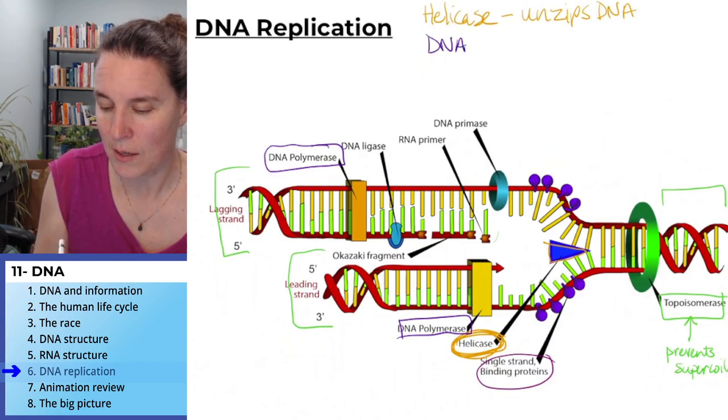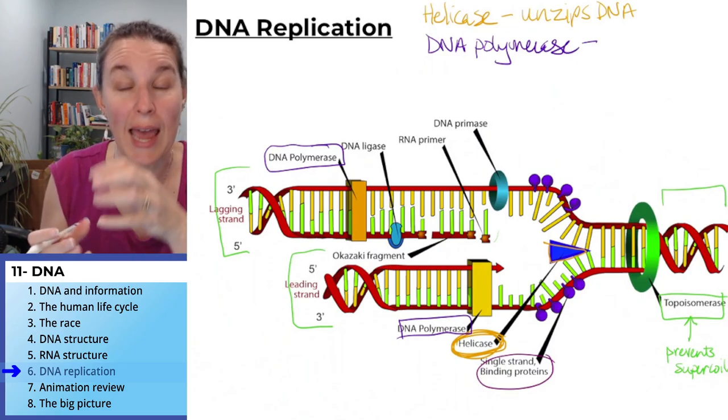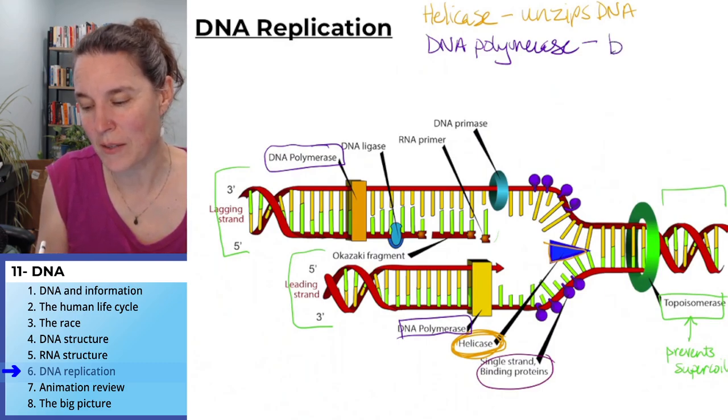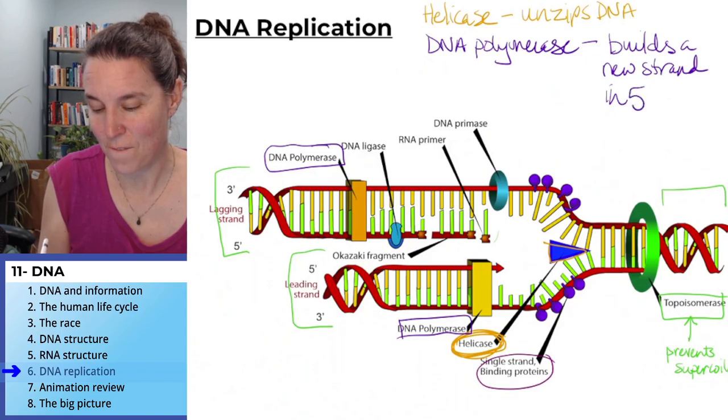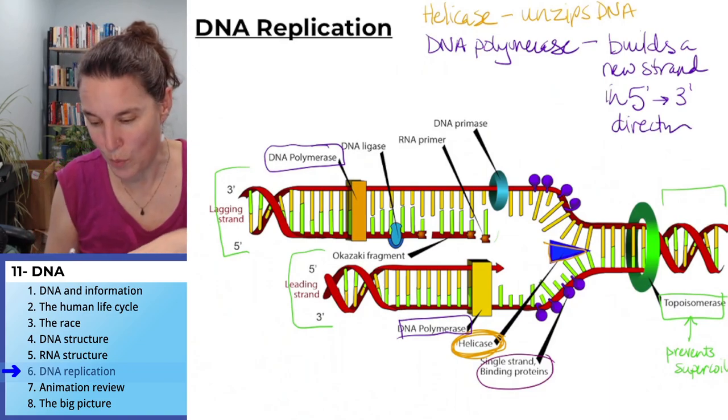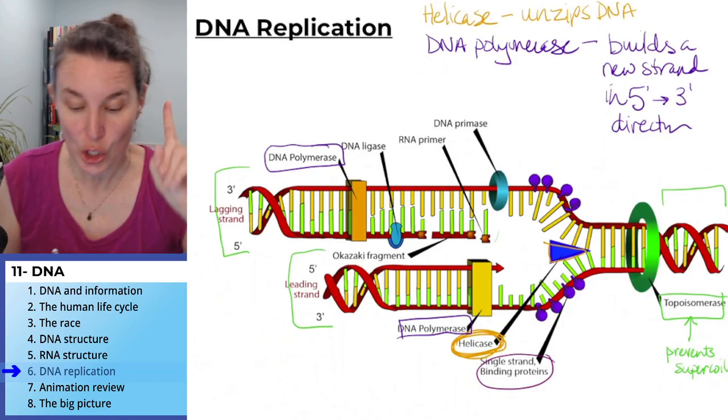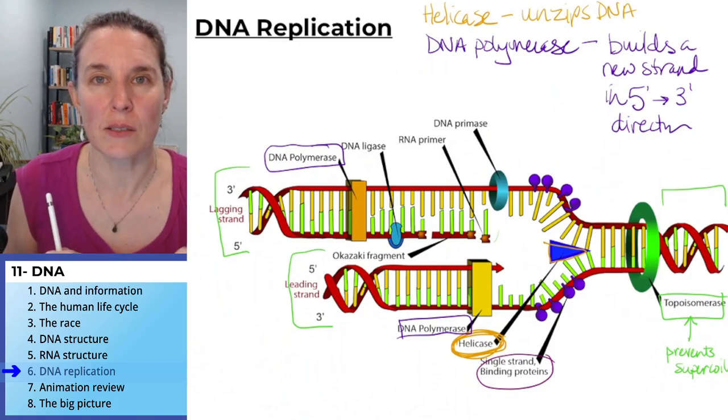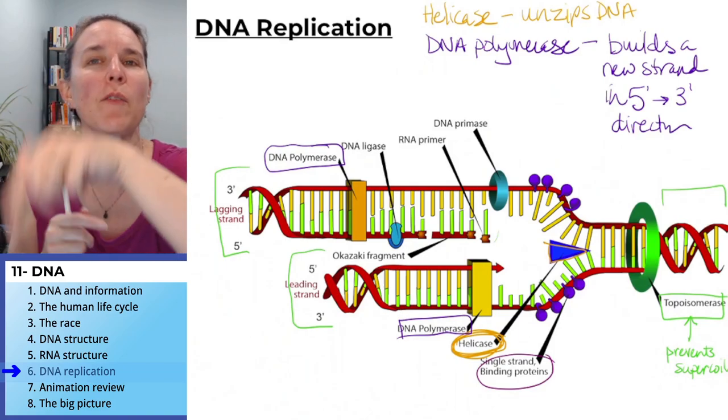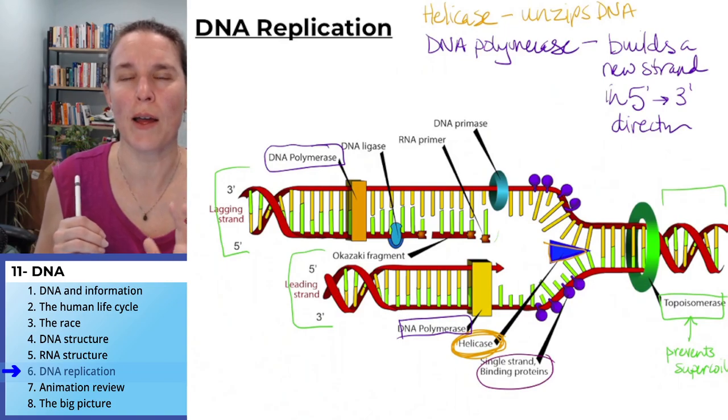DNA polymerase is the main dog who does the building adding in the nucleotides and it builds a new strand in the five prime to three prime direction. So the new strand, the new piece of DNA is being built in the five prime to three prime direction, which means you have one of your strands, when you open it up, one of them is just going to zip along. DNA polymerase is just going to go and be moving in the five prime to three prime direction and building new molecules. So behind them is growing five prime to three prime strand.